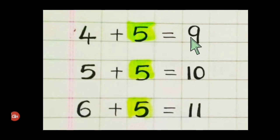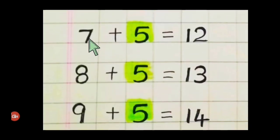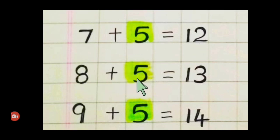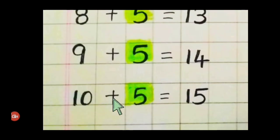Six plus five is eleven. Seven plus five is twelve. Eight plus five is thirteen. Nine plus five is fourteen. Ten plus five is fifteen. Repeat once again.